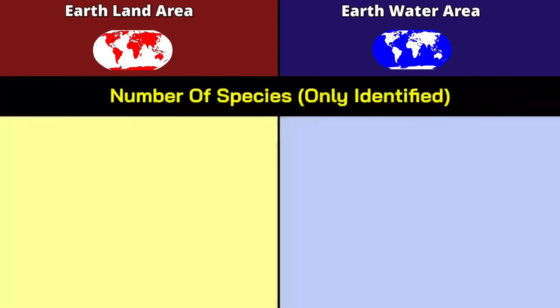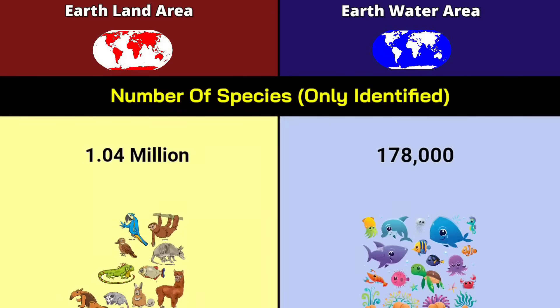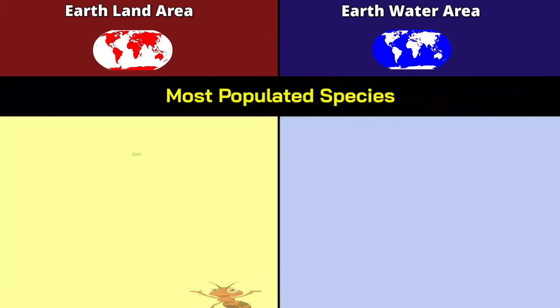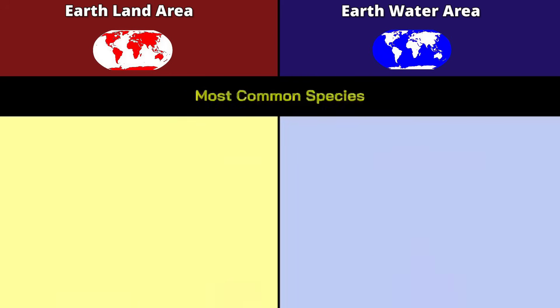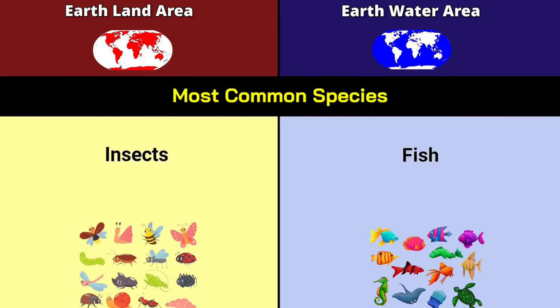Number of species: land has 1.04 million, water has 178 thousand. Most populated species: ants at 20 quadrillion on land, and not known for water. Most common species: insects on land, and fish in water.